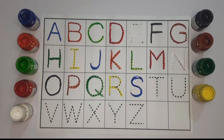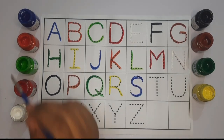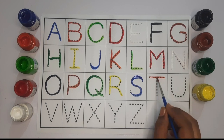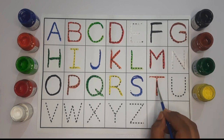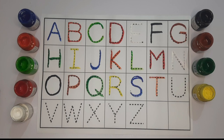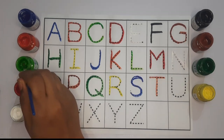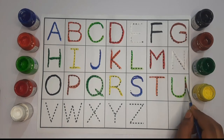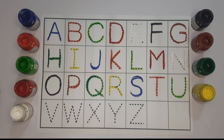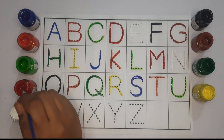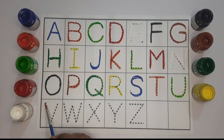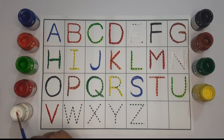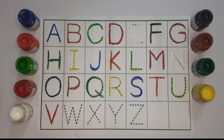This is R. Now we will use blue color again to write S. This is S. Now we will use orange color to write T. This is T. Now we will use green color to write U. This is U. Now we will use white color to write W.